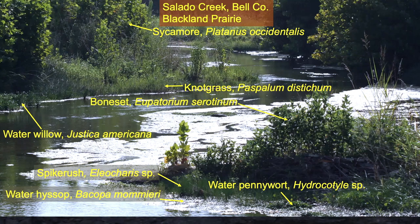This creek floods pretty regularly and it will rearrange itself. Floods bring in nutrients and plant parts. Another attribute of these riparian plants is they can root from just a broken piece — so when a flood breaks the plants apart and they land on some fresh mud, sediment, or a gravel bar, they can start growing again. That's one difference compared to the upland varieties of these plants.